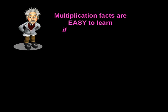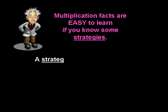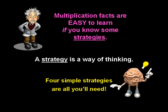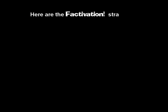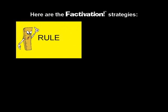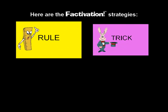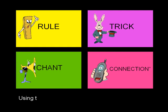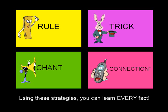Multiplication facts are easy to learn if you know some strategies. A strategy is a way of thinking. Four simple strategies are all you'll need. Here are the factivation strategies: rule, trick, chant, and connection. Using these strategies, you can learn every fact.